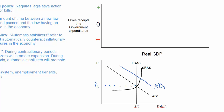Without any counter-cyclical automatic stabilizers, we would expect to see GDP increase to a level beyond full employment to Y2, and the price level increase due to demand-pull inflation to P2. Let's assume that at YFE, the country had a budget balance of zero – in other words, its total tax receipts equaled its total government expenditures. The question is what will happen to government expenditures and tax receipts as the economy moves from YFE to a higher level of income, Y2.